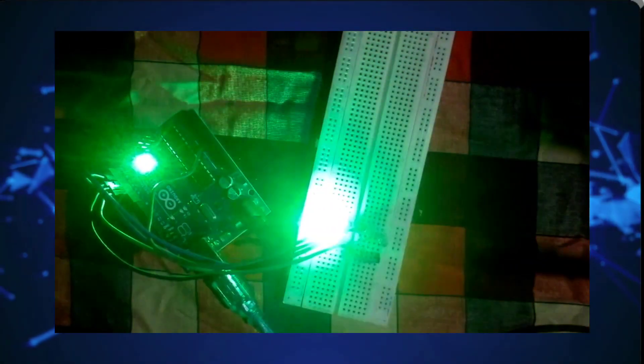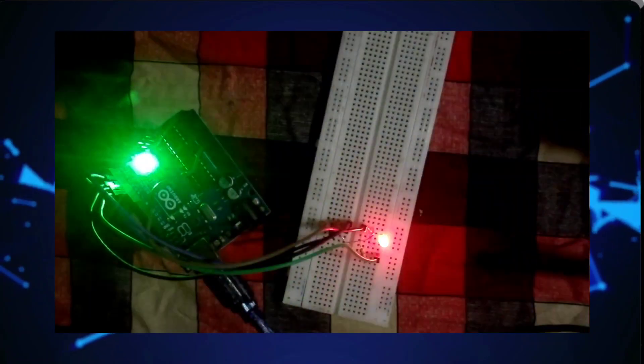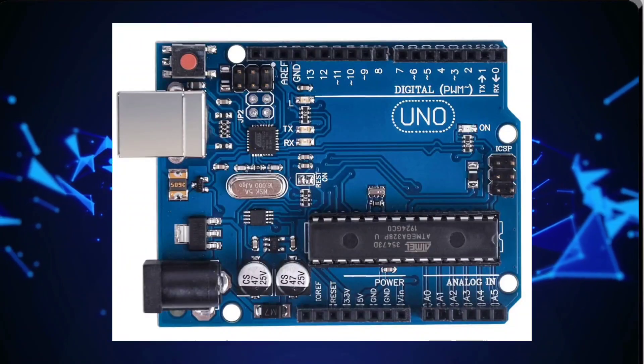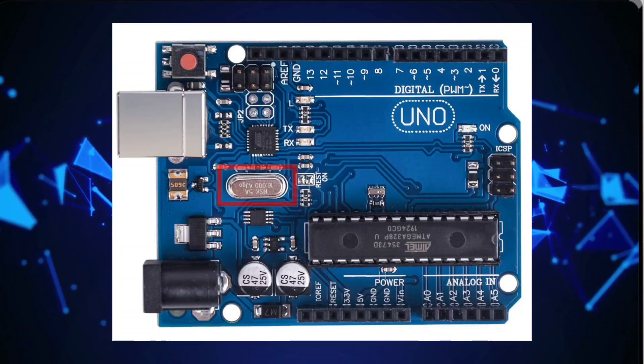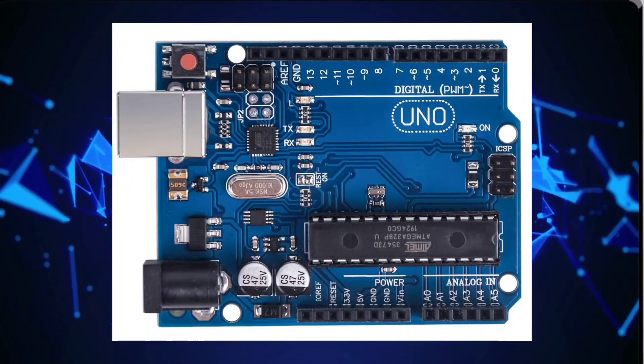The ATmega328P microcontroller on Arduino Uno operates at a clock speed of 16 MHz. This allows for fast and efficient execution of instructions.